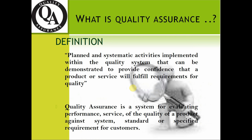What is Quality Assurance? It consists of planned and systematic activities implemented within the quality system that can be demonstrated to provide confidence that a product or service will fulfill requirements for quality. Quality Assurance is a system for evaluating the performance and quality of a product or service against a standard or specified requirement for customers.